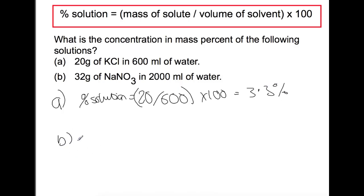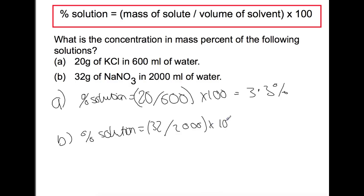Let's try part b. We are again calculating percentage solution, so we take the mass of our solute divided by the volume of solvent that we're using, then times by 100 to give 1.6%. You can be asked to calculate any part of this equation.